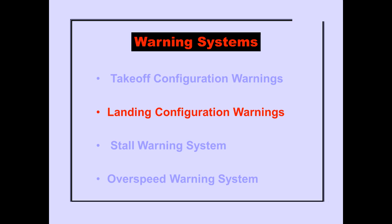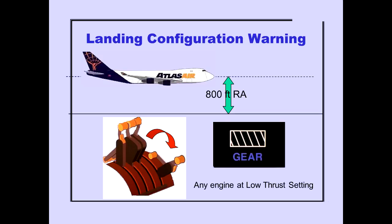Let's now discuss the landing configuration warning system. The landing configuration warning system alerts the crew that the landing gear is not down for landing.